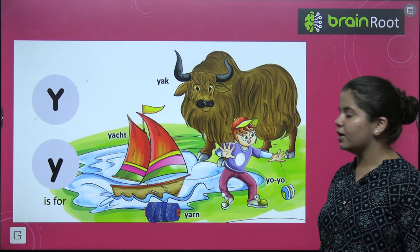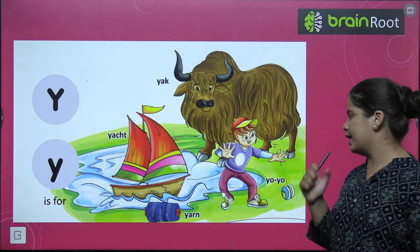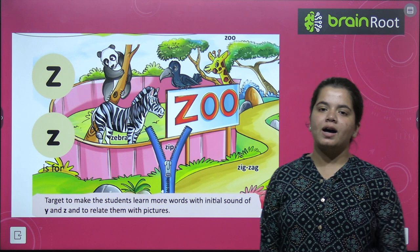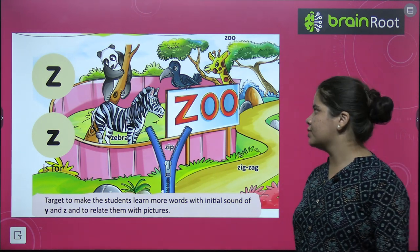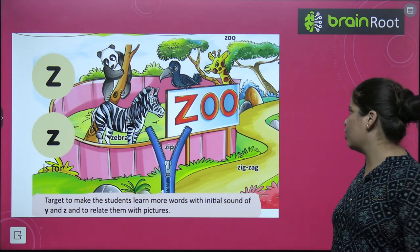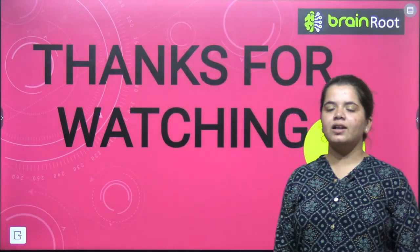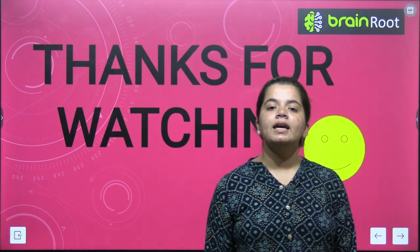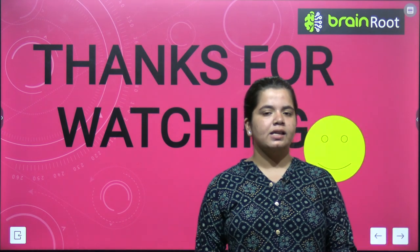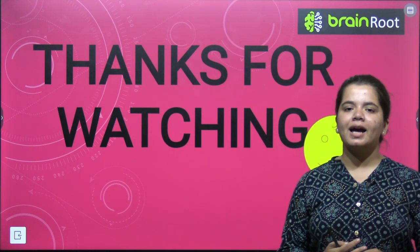Next is Y. Y for yacht, Y for yak, Y for yoyo, Y for yarn. So is that clear to everyone? Very good. Last one that we have is Z. Z for zebra, Z for zip, Z for zoom, Z for zigzag. Okay kids, is that clear to everyone? Yes it is. Very good. So now we have understood properly how we have to recognize A to Z. Now that's it for this topic. Thanks for watching. I will meet you in the next video. Till then, goodbye and take care.